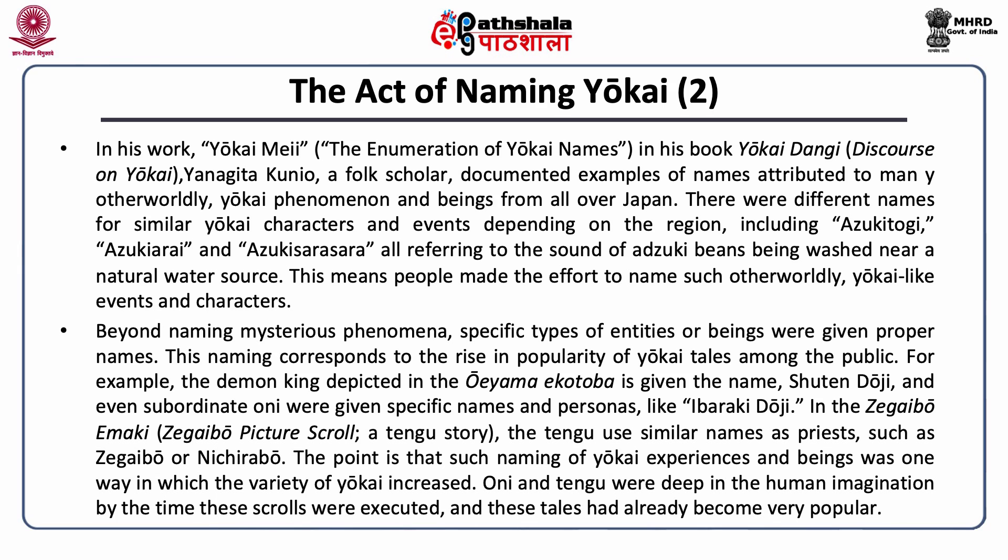In his work Yokai Meyi — the enumeration of Yokai names — in his book Yokai Dangi, Discourse on Yokai, Yanagita Kunio, a folk scholar, documented examples of names attributed to many otherworldly Yokai phenomena and beings from all over Japan. There were different names for similar Yokai characters and events depending on the region, including Azuki Togi, Azuki Arai, and Azuki Sarasara — all referring to the sound of Azuki beans being washed near a natural water source. This means people made the effort to name such otherworldly Yokai-like events and characters.